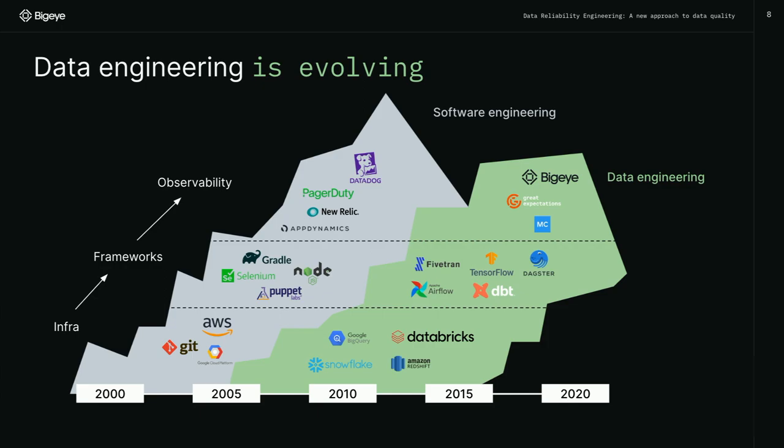Typically, this has been a data quality problem, and data quality meant hiring people to verify reports and look at numbers every day — if anything looks wrong, go investigate. But we can't scale this way. Data systems and platforms are scaling much faster than we can hire and onboard new people. We need tools to help solve this, but we also need a different mindset about how to think about data quality. Enter data reliability engineering.